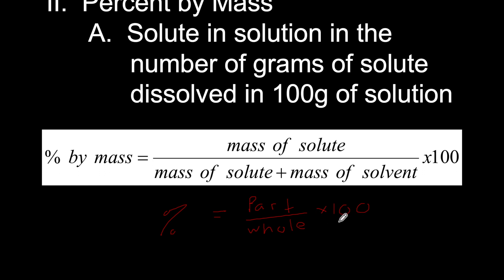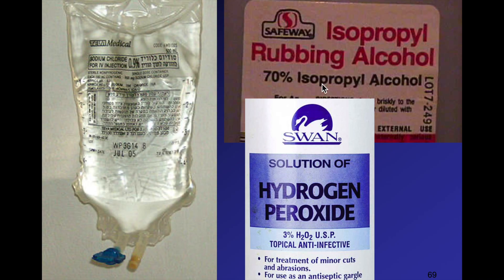Some places you may have seen this: a container of rubbing alcohol labeled as a 70% solution means that out of 100 grams of isopropyl alcohol, 70 grams is actually rubbing alcohol and 30 grams is water. Hydrogen peroxide sold in stores is a 3% solution — out of 100 grams, only 3 grams is hydrogen peroxide and 97 grams is water.